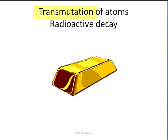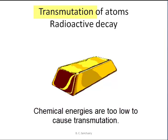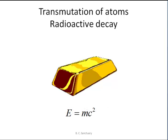This is called transmutation. Alchemists failed because it is not possible to transmute elements with chemical reactions. You need nuclear reactions, and the energy is much greater than the chemical energy because of E equals mc squared.